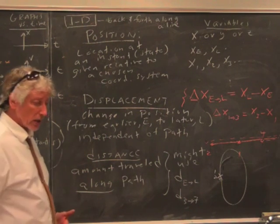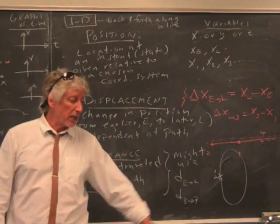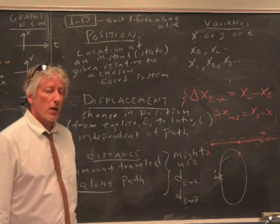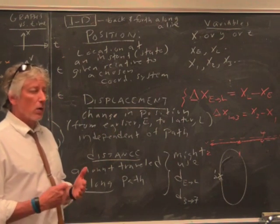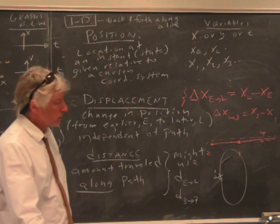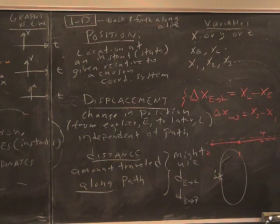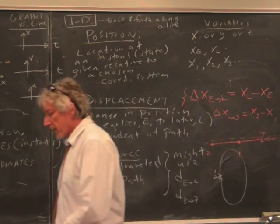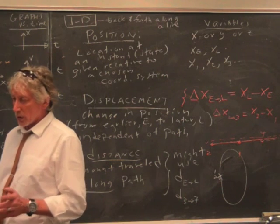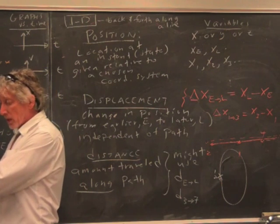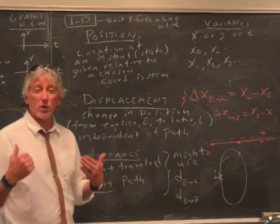So distance is the amount traveled along the path, and there's no simple variable. So you might use D from earlier to later or whatever symbol you want. D from 3 to 7, D from 1 to 2, D from 1 to 3. What was your distance? That's your exercise. I start here. I go out. I come back. I end in the same place. My displacement is zero, but I did get some exercise.